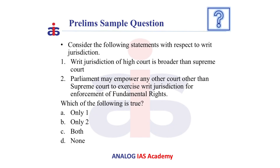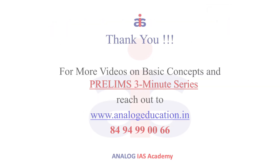Now let us see a question based on this. Consider the following statements with respect to writ jurisdiction. Statement one: the writ jurisdiction of the High Court is broader than the Supreme Court — this is true, because the High Court has writ jurisdiction over both fundamental rights and ordinary legal rights, whereas the Supreme Court has writ jurisdiction only over fundamental rights. Statement two: Parliament may empower any other court, other than the Supreme Court, to exercise writ jurisdiction for enforcement of fundamental rights — this is also true. So the answer is C, both statements are correct. Thank you.